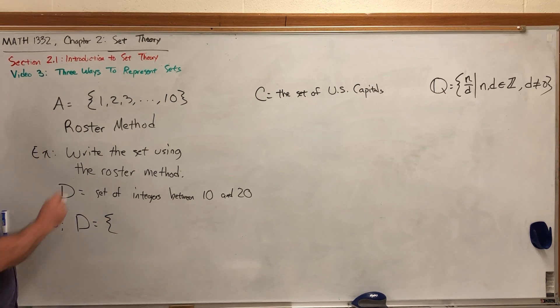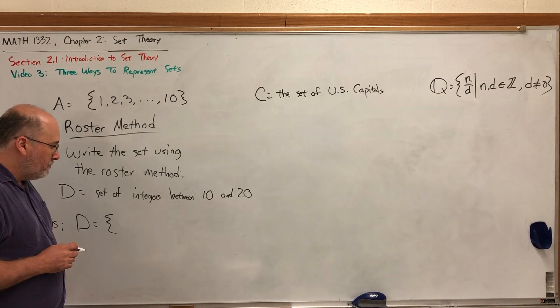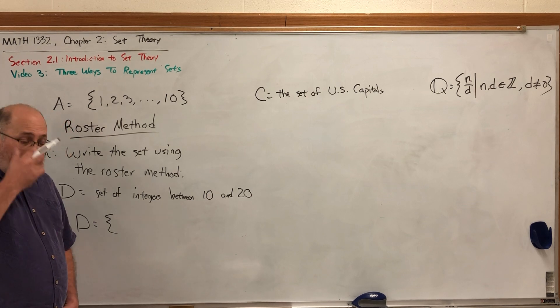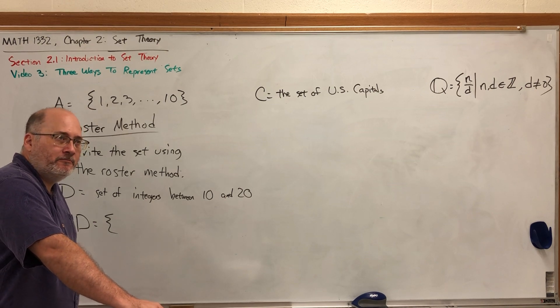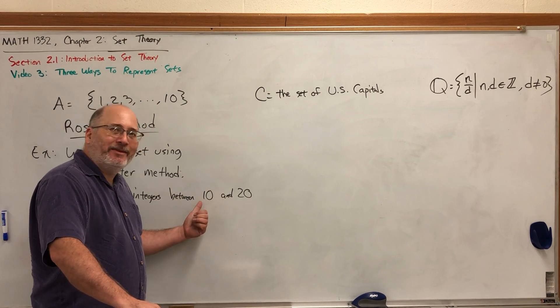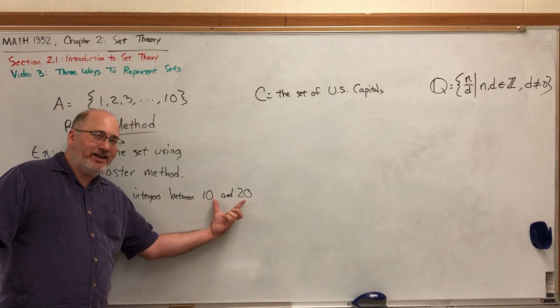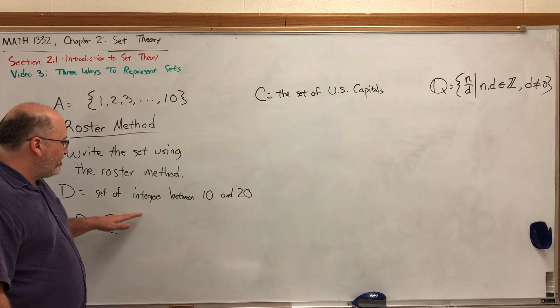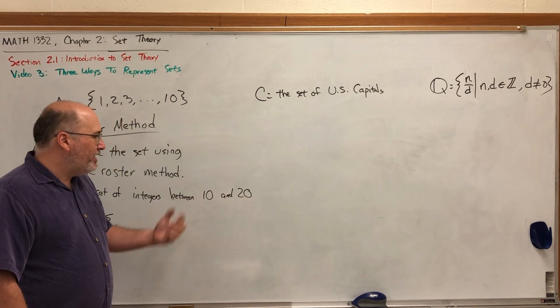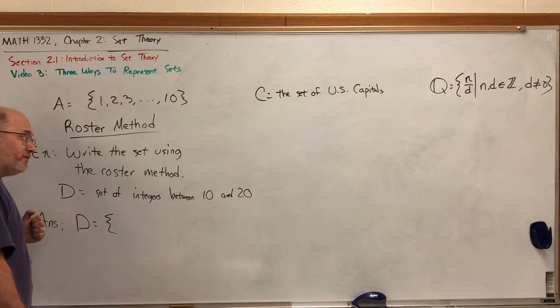We could write it in roster form by simply writing the first element comma, the second element, all the way to the last one. So where would the set begin? The set of integers between 10 and 20. There's a debate whether or not this includes the number 10. Let me ask you, is the number 10 between 10 and 20? For me, between means in the middle somewhere, and 10 is not in the middle between 10 and 20. If you see the phrase 'between,' the implication is it does not include the beginning and ending numbers unless it says the word inclusive.